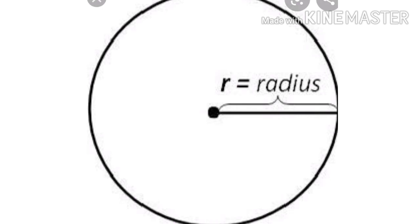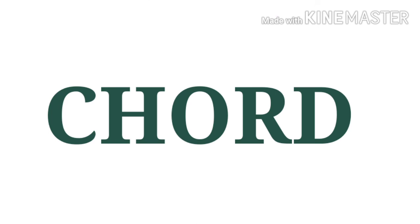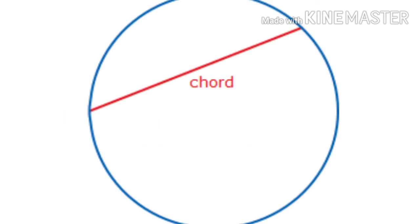Next is chord. A line segment joining any two points on the circle is called a chord of the circle.